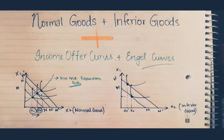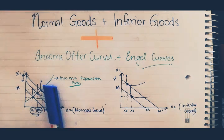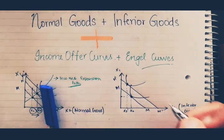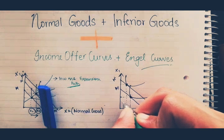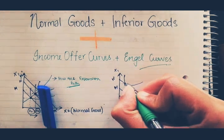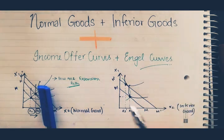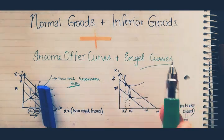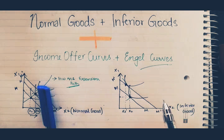We've looked at income offer curves. In the same way, the income offer curve for inferior goods would be going somewhere around like that. You don't need to worry about the exact way the curves look — it's just about connecting the dots of the optimum demand bundles from each income shift.